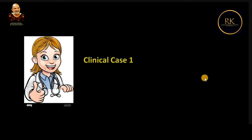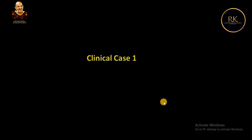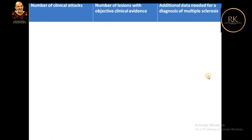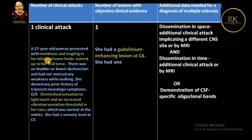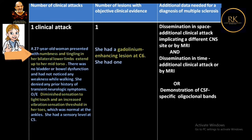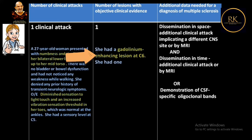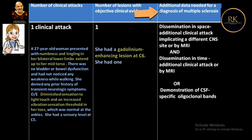Now let us return to the case discussed at the beginning. This patient has one clinical attack in the form of numbness and tingling in bilateral lower limbs extending up to the mid-dorsal level. She denies any prior history of transient neurological illness, and examination findings support the clinical attack. She has a gadolinium-enhancing lesion at C6, which provides objective clinical evidence of the attack — so this is one clinical attack with one lesion showing objective clinical evidence. We therefore need both dissemination in space and dissemination in time as additional data to confirm the diagnosis of multiple sclerosis.